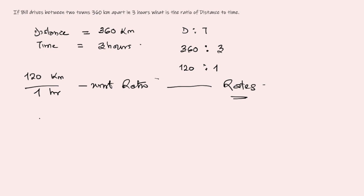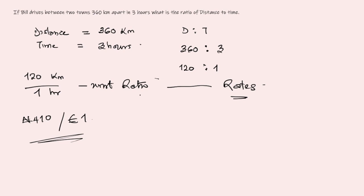Rates are usually expressed with time — for example, kilometers per hour, meters per second, or a quantity per day. In exchange rates, for example, you might have 410 naira to every one euro — that is a rate. A rate is simply a ratio expressed with one value as 1, the denominator.